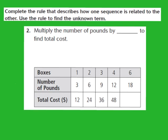Let's take a look at question number 2. The directions say: complete the rule that describes how one sequence is related to the other, and use the rule to find the unknown term. For question 2, they say: multiply the number of pounds by blank to find the total cost. We have to decide what we're going to multiply the number of pounds by. We need to come down to our table. The first set of numbers going across represents the number of pounds.